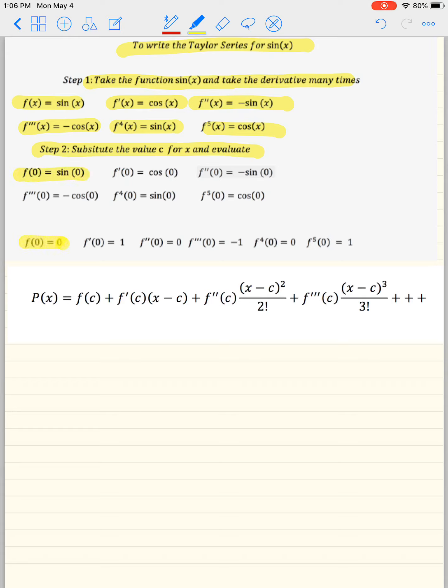Sine of 0 is 0. Cosine of 0 is 1. Negative sine of 0 is 0. Negative cosine of 0 is negative 1.